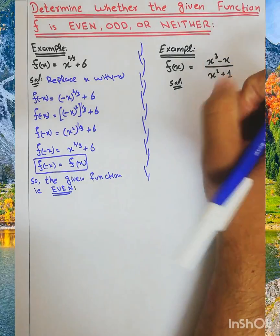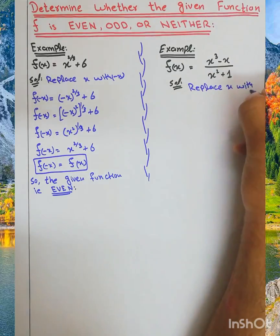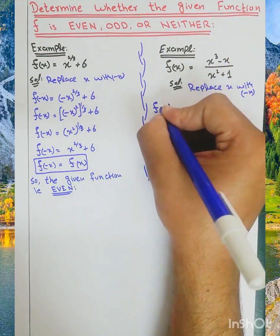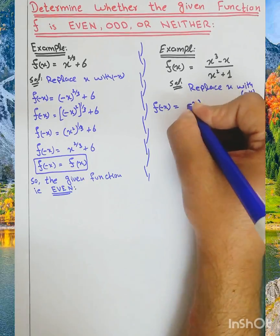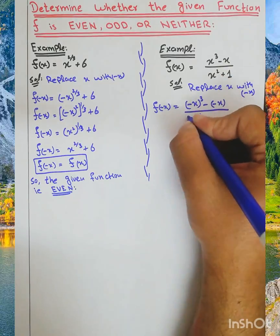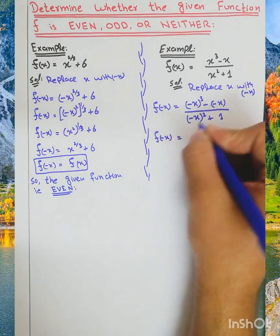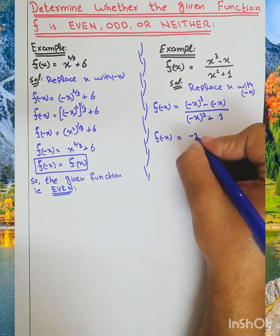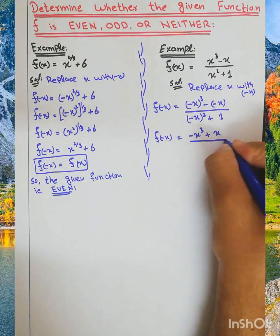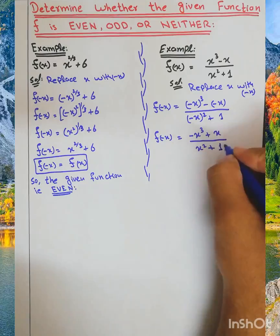We will replace x with minus x. So f of minus x is equal to minus x cubed plus x, which becomes negative x to the power 3 plus x.